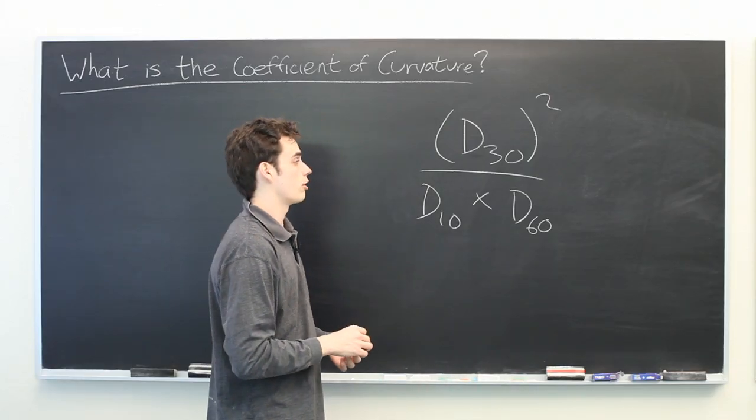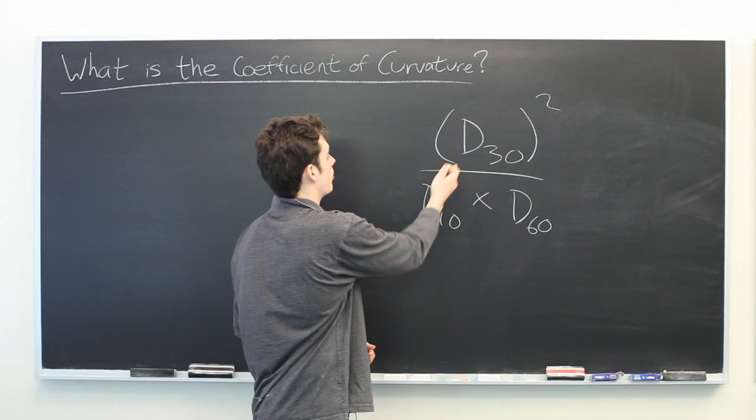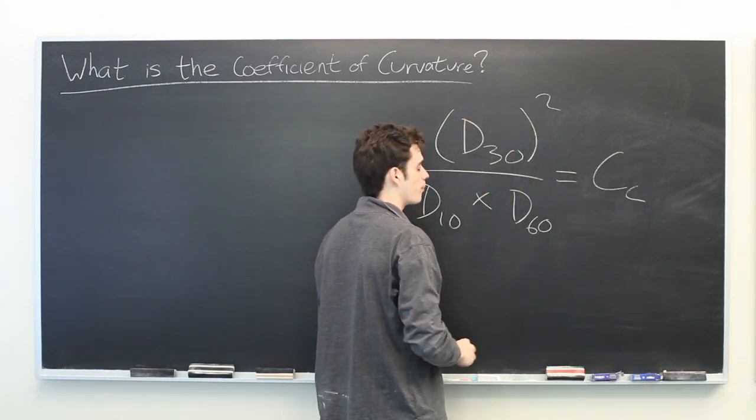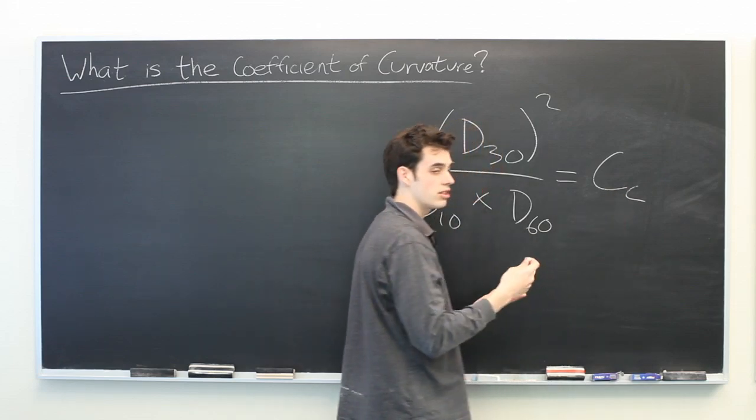If one can accurately determine these numbers, one can simply plug them in here, which gives us the coefficient of curvature, which is typically indicated by C sub C.